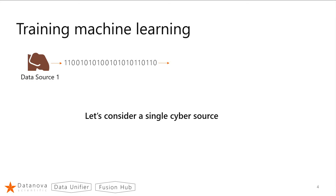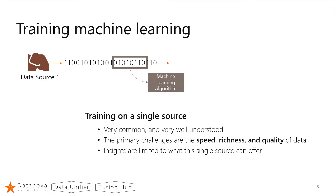Let's talk about training data for machine learning. Assume there's a data source — let's call it data source one. Data source one is producing a stream of data. You can take that data, use part of it as training data, use part of it as testing data, and deploy a machine learning algorithm on it. This is a very common, well-understood way of how to do things. All our machine learning statistical theories, sample complexity, and other ways of quantifying machine learning apply very readily to this domain. We have the science.